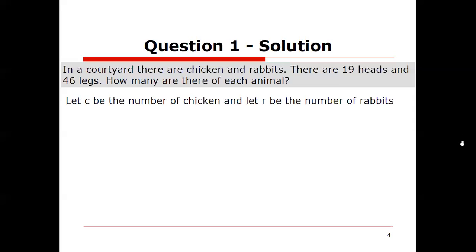Total of 19 heads. Well as far as I know every chicken I've met and every rabbit I've met has had one head exactly. So number of chickens plus number of rabbits, c plus r must equal 19, the number of heads. There's our first equation and it's linear.